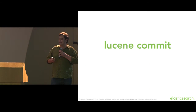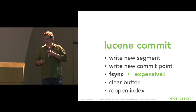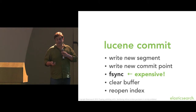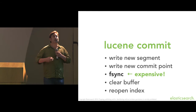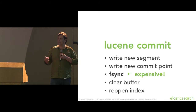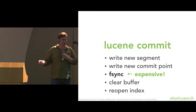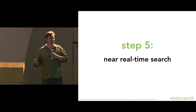A Lucene commit writes a new segment, writes a new commit point, f-syncs it to disk, and clears the in-memory buffer. Then it reopens the index, which contains all these segments, to make them all searchable. The problem is f-syncs are really expensive, so you can't do this frequently.